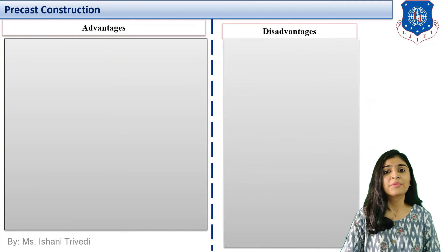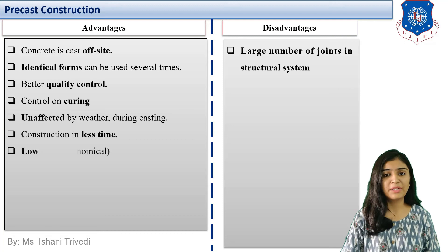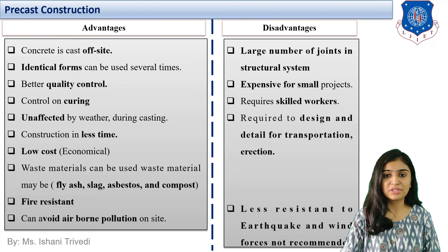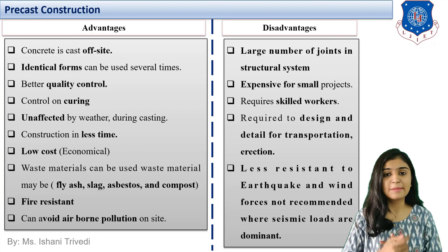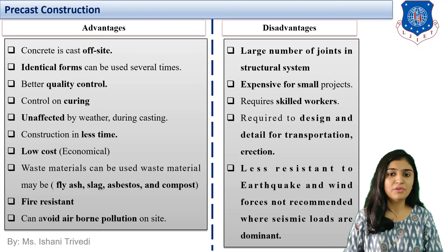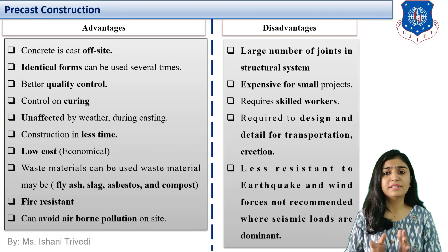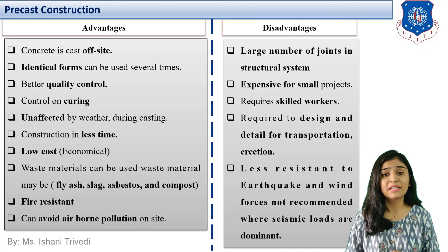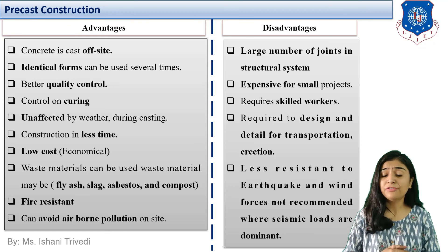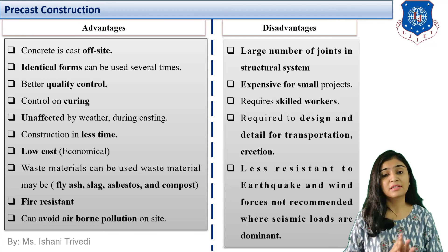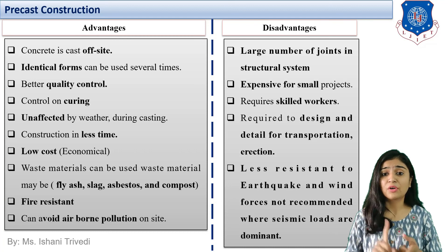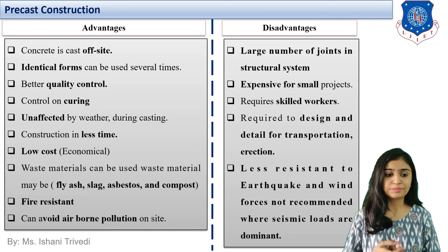Now let us discuss the advantages and disadvantages of precast concrete construction. Everything has its pros and cons. First, concrete is cast off-site, so less space is required on site. Identical forms can be used several times, making bulk production easy. Better quality control is achieved compared to cast-in-situ, and controlled curing leads to less water wastage.